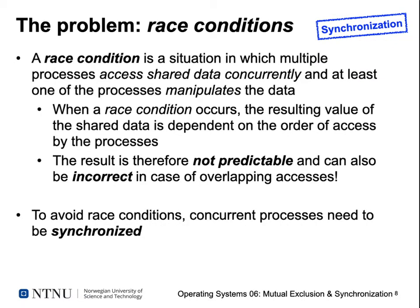The problem that shows up when running two processes that operate on the same data in parallel is called a race condition. A race condition is defined as a situation in which multiple processes access shared data concurrently, and at least one of the processes manipulates the data. When a race condition occurs, the resulting value of the shared data depends on the order of accesses by the processes and can be an incorrect value. The result is therefore unpredictable, depending on the order the processes execute and interrupt each other.